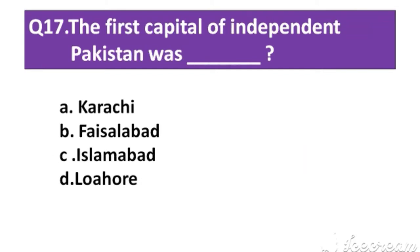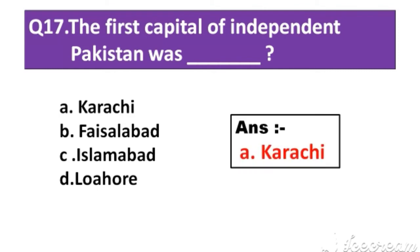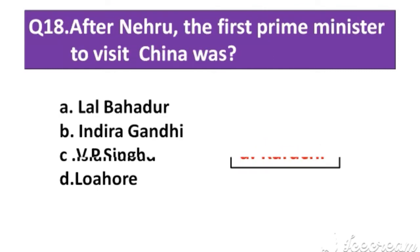Question number 17: The first capital of independent Pakistan was which city? Option A: Karachi. Option B: Faisalabad. Option C: Islamabad. Option D: Lahore. The right answer is Option A: Karachi.